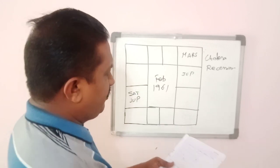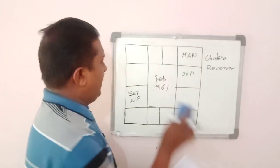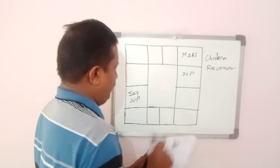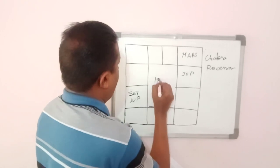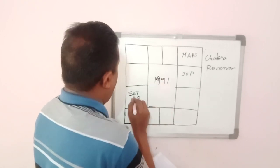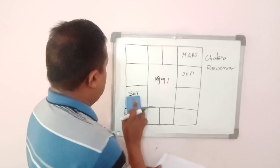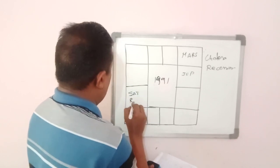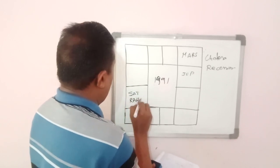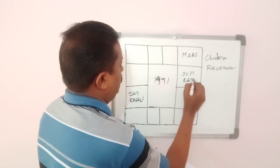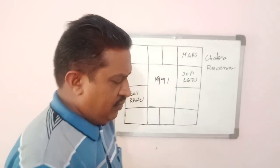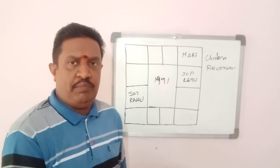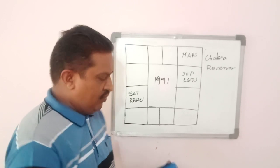Again in 1991, when Saturn entered Capricorn along with Rahu and Jupiter with Ketu, we had one more hit of cholera epidemic in Peru.